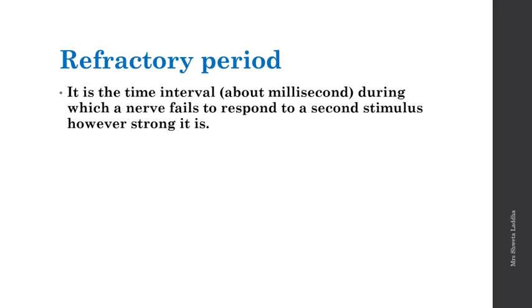Refractory period is the time interval — in milliseconds — during which a nerve fails to respond to a second stimulus, however strong it is. It can also be called a break period. It is that gap, that interval, that break where the nerve fails to respond to a second stimulus, however strong, even if only for milliseconds.